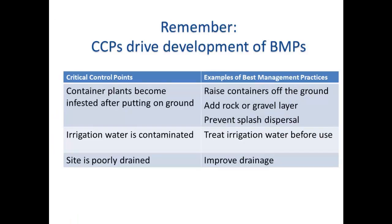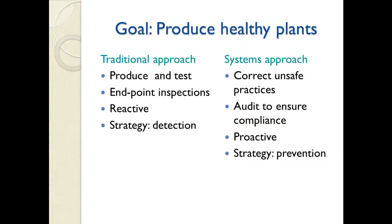Now that you've identified key points of vulnerability in your nursery — your critical control points for Phytophthora — you'll be able to develop meaningful best management practices, and there are lots of options for BMPs provided in the manual. When you implement a systems approach, you're correcting unsafe practices and preventing disease from occurring in the first place. While identifying critical control points and implementing BMPs is voluntary, it could be coupled with an auditing and certification system, as has been done in Australia with their Biosecure HACCP program.